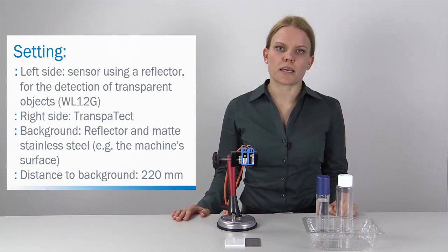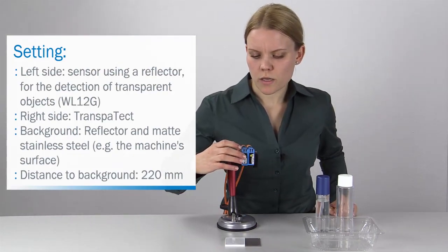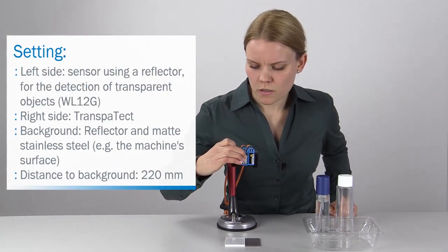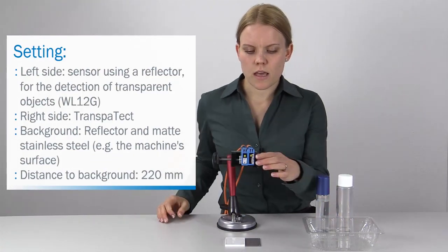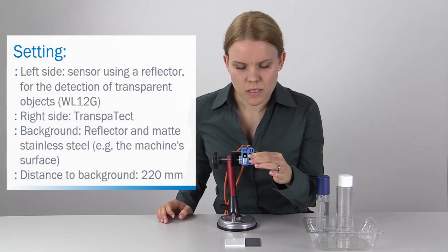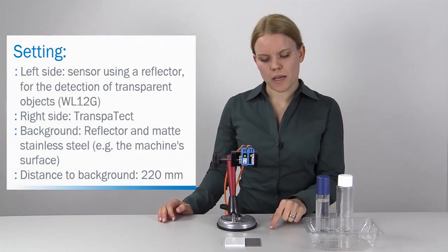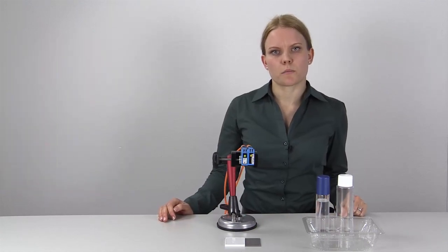For example, if you have an application in a filling machine. I'm teaching the retroreflective sensor on the reflector and the Transpatect on the stainless steel background. The distance between sensor and background is 220 mm.